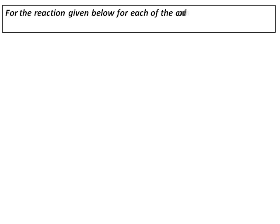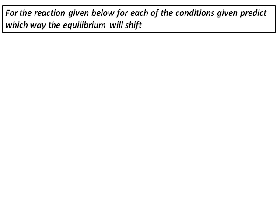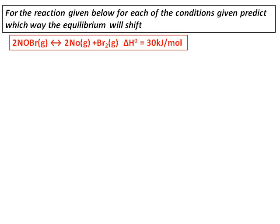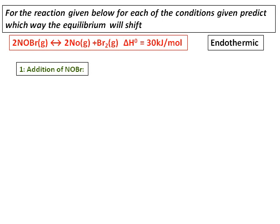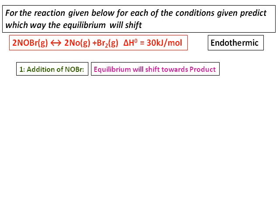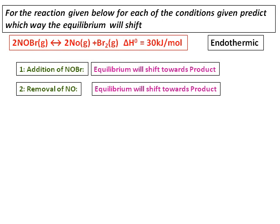Let's do one example applying Le Chatelier's principle. For the reaction given: NOBr giving NO plus Br2, with delta H° equals +30 kJ/mol — meaning this is an endothermic reaction. First, what happens when NOBr is added? NOBr is a reactant, so the equilibrium will shift towards the product. Second, removal of NO: NO is a product being removed, so the equilibrium will again shift towards the product.